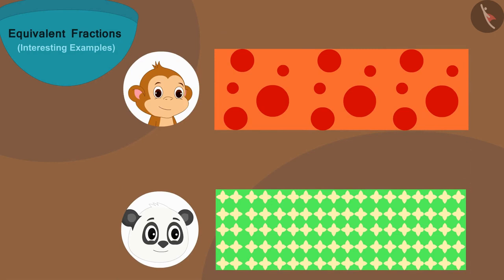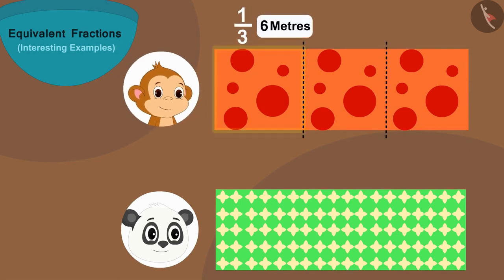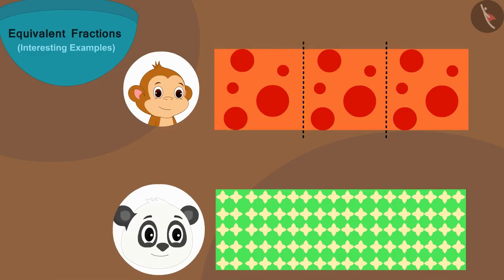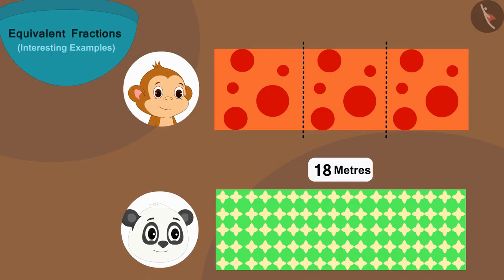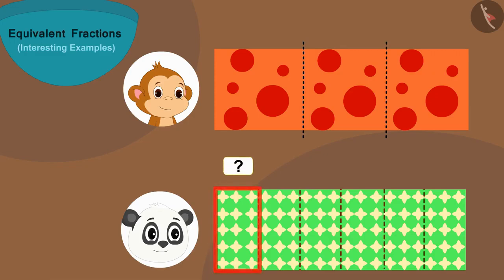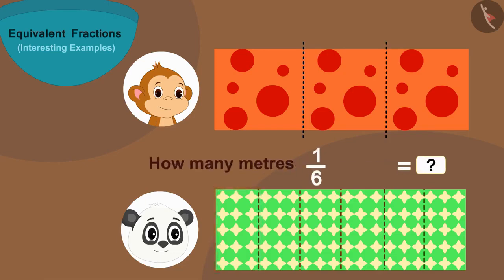Let's look at it in another way. We saw in the beginning of the video that one-third part of Babban's cloth is six meters long. The length of Golu's cloth is also 18 meters, and he has made six equal parts of his cloth. So how many meters will the length of one part be?